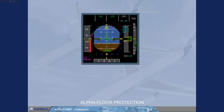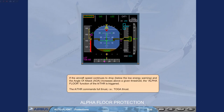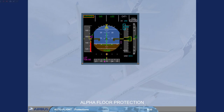If the aircraft speed continues to drop below the low-energy warning and the angle of attack increases above a given threshold, the alpha floor function of the autothrust is triggered. The autothrust commands full thrust, i.e. TOGA thrust. The angle of attack threshold which triggers the alpha floor protection is processed by the PRIM as a function of aircraft parameters such as configuration and weight. When alpha floor is triggered, autothrust is turned on if it was previously off, indicated by a white autothrust on the FMA, and alpha floor in green is displayed as the autothrust mode.